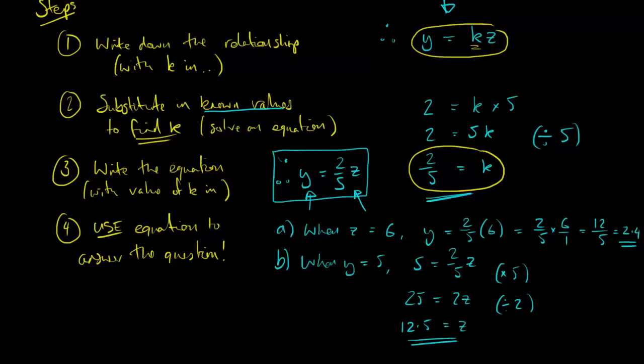So, we've solved it. And just to recap the four steps there. First of all, write down the relationship. It's always one thing equals k times the other for direct proportion. Then you just need to find out what k is. That unlocks the question. So, substitute in the values that you know, a pair of values that you know. That will tell you k. Step 3, write down the equation. Once you've got the equation, you can use it to answer the question. Okay, that's it for now.